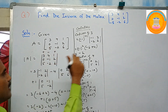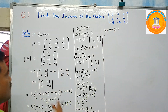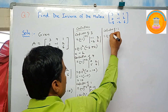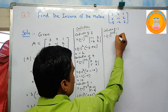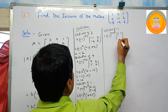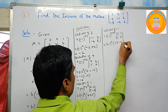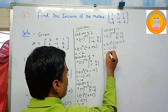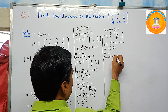Cofactor of minus one: minus one is in the second row and second column, so i equals two, j equals two. Minus one to the power two plus two equals four. The minor is the determinant of three, one, five, six, which equals three times six minus five times one equals eighteen minus five equals thirteen. Since power four is even, plus one times thirteen gives cofactor of minus one equals thirteen.